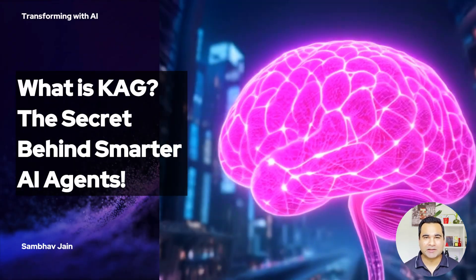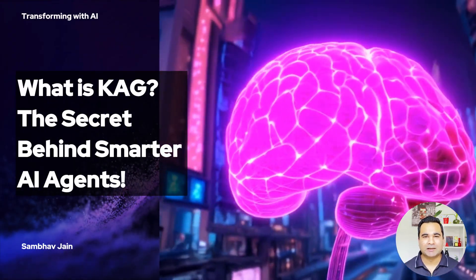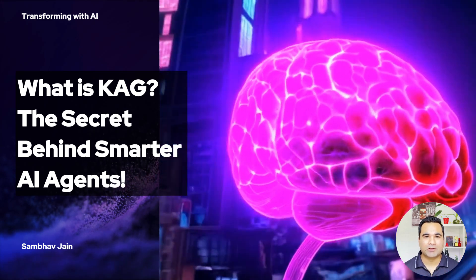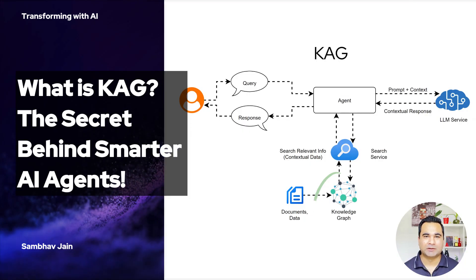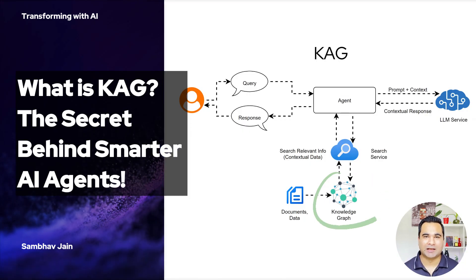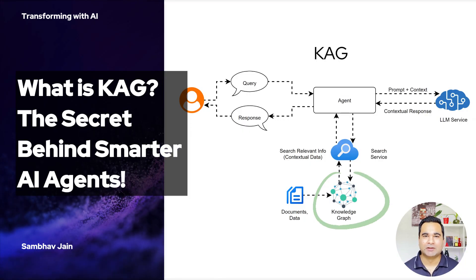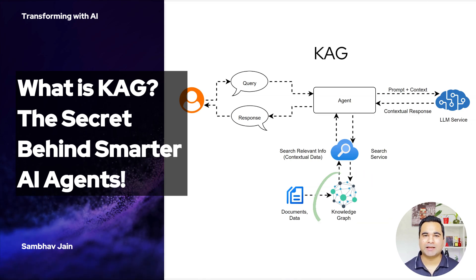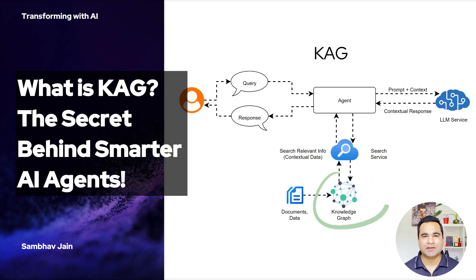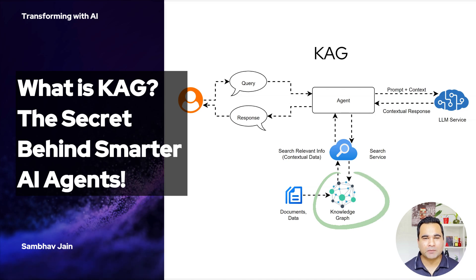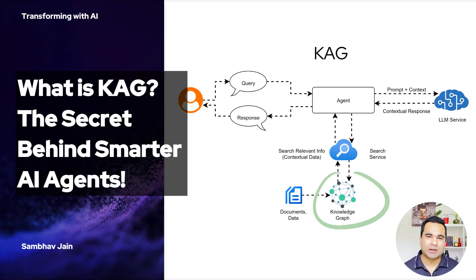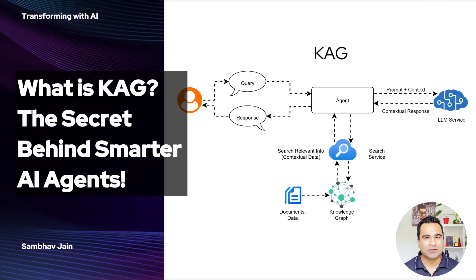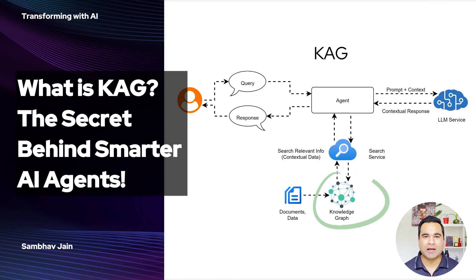Today, we're diving into something truly exciting: Knowledge Augmented Generation, or KAG. Imagine an AI agent that doesn't just generate answers, but actually understands the relationships between facts, people, and ideas. Sounds futuristic, right? Well, the future is here. And by the end of this video, you'll see why KAG is the secret behind smarter AI agents.